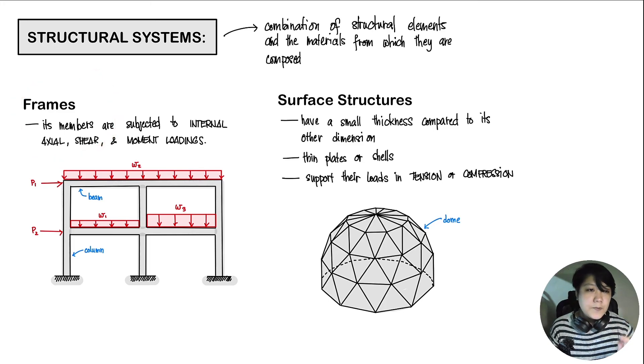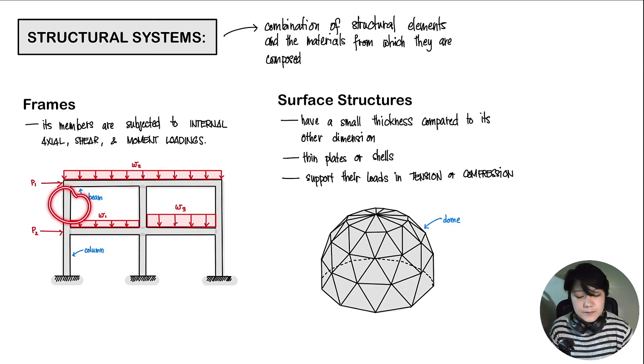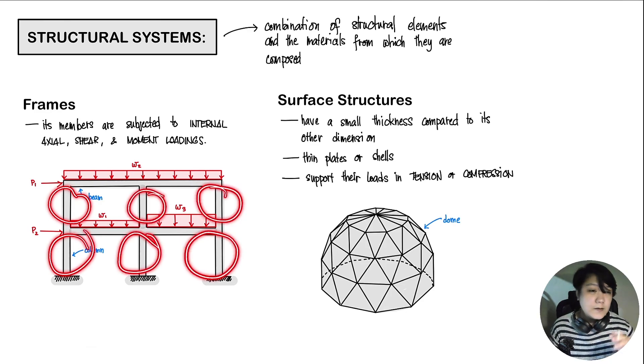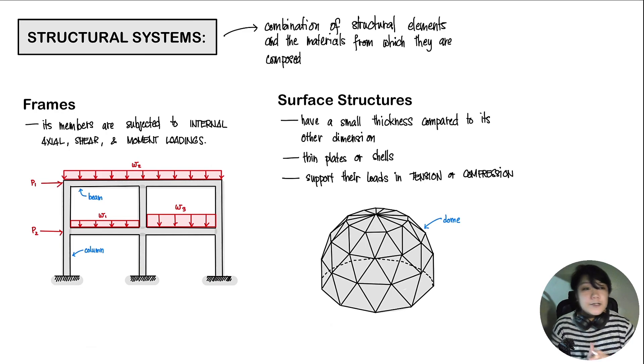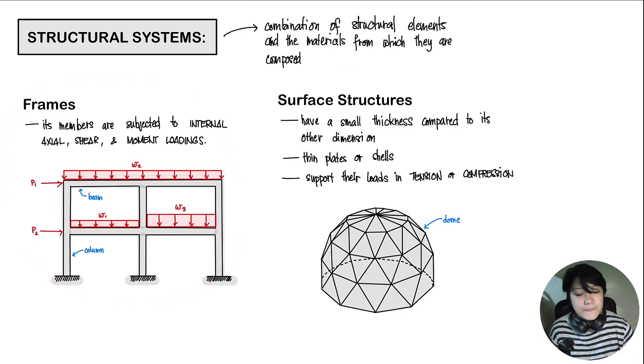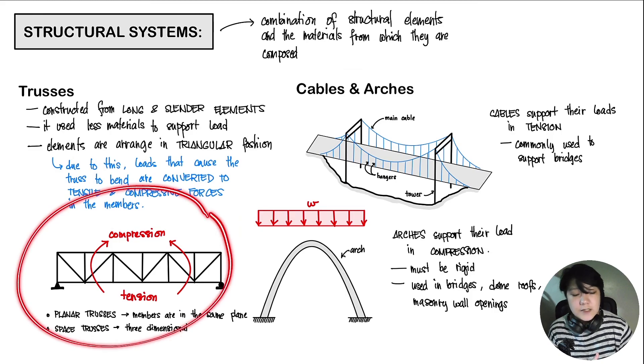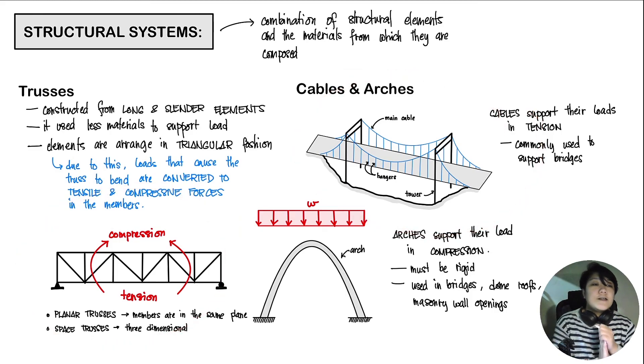Your frames are composed of your different elements, such as your beams and your columns. The most typical structural systems that we will encounter in this course would be your frames and then your beams, and then you have your trusses, and then you have your cables and arches.